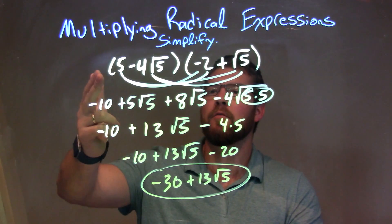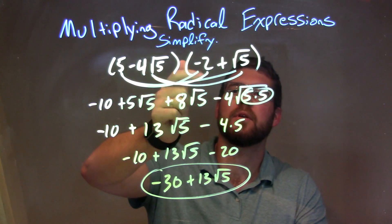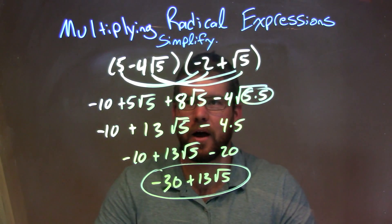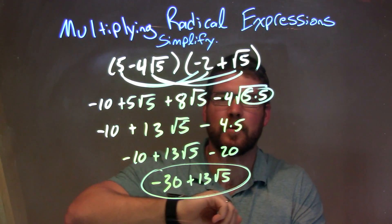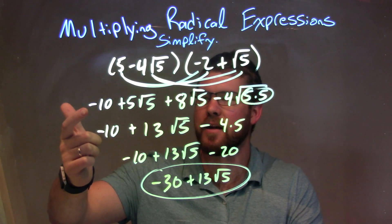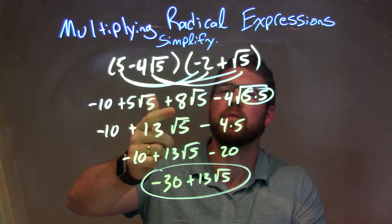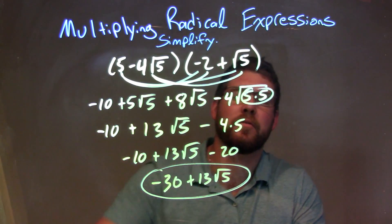So let's recap. We're given 5 minus 4 square root of 5 times negative 2 plus the square root of 5. We can distribute that across all parts of my first parenthesis times all parts of my second parenthesis, and that gives us negative 10 plus 5 square root of 5 plus 8 square root of 5 minus 4 times the square root of 5 times 5.